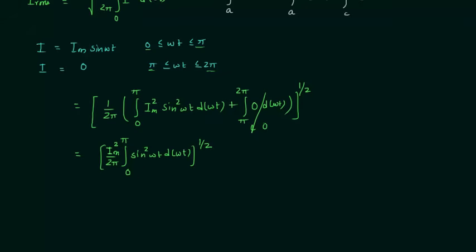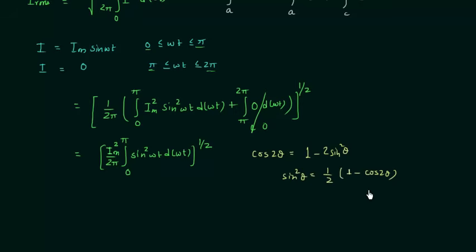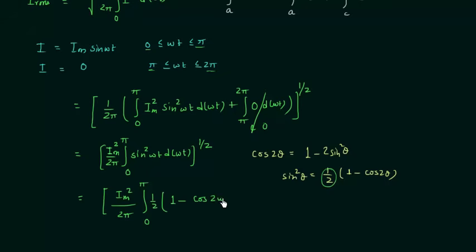We cannot integrate sin²(ωt) directly, so I will use the formula for cos(2θ): it is equal to 1 minus 2 sin²(θ), so sin²(θ) equals 1/2 times (1 minus cos(2θ)). I will use this to perform the integration with ωt in place of θ. We have I_M² divided by 2π, times the integral from 0 to π of 1/2 times (1 minus cos(2ωt)) dωt.